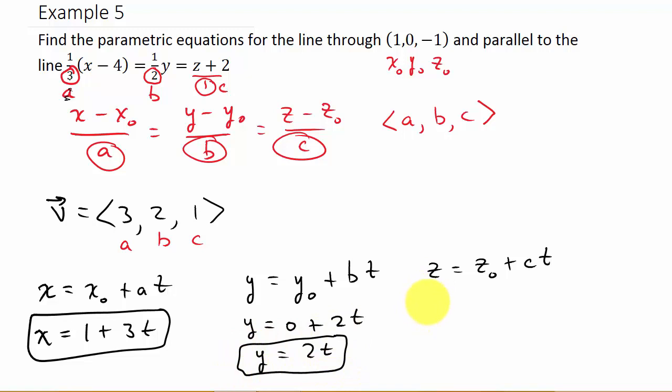And then z is equal to z naught, which is negative 1, plus c. c is 1, so 1 times t. So z is negative 1 plus t. And there's your parametric equations.